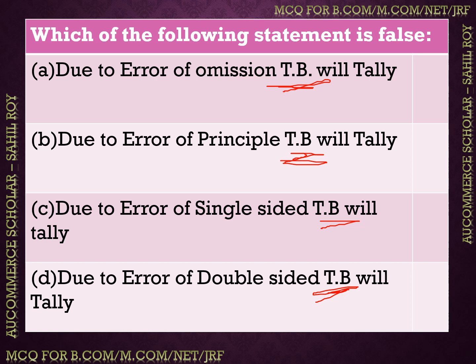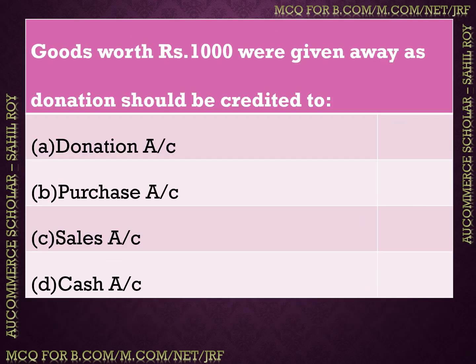The options are: (1) due to error of omission, trial balance will tally; (2) due to error of principle, trial balance will tally; (3) due to the error of single-sided entry, trial balance will not tally; (4) due to error of double-sided entry, trial balance will tally. The correct answer is option C — due to the error of single-sided entry, the trial balance will not tally, as one side's total will be higher or lower.